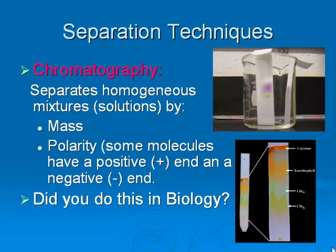Paper chromatography is another way to separate mixtures. If we have a mixture of ink, we can separate the different pigments using paper chromatography — we're going to be doing this in lab a little later this year. The mixture is separated because the molecules have different masses and different polarities. You probably did this in biology — you can use paper chromatography to separate mixtures of chlorophylls onto your chromatography paper.